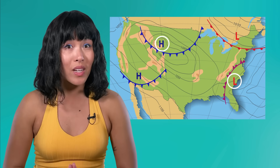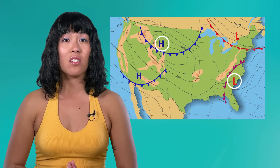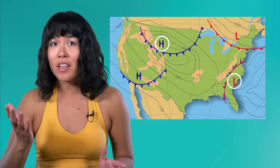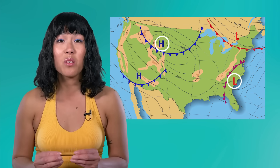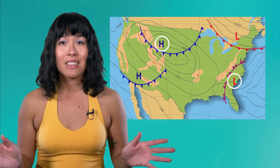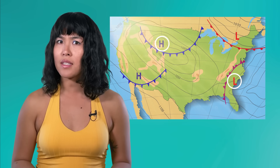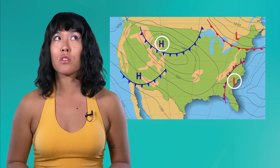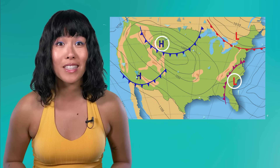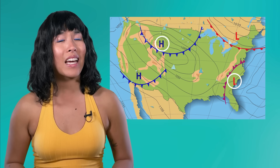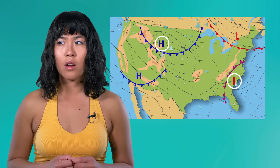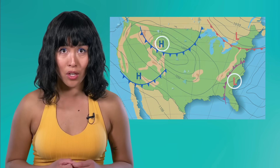Except the weather forecast today looks like a modern art masterpiece. Triangles, circles, lines, and squiggles everywhere. Does a triangle mean it's going to be sunny or does it just mean we're going to have some really weirdly shaped rain today? And what's with the H and L? Maybe it's H for hot and L for less hot? I'm officially lost.